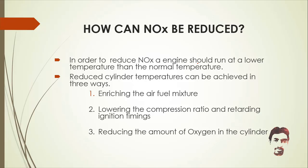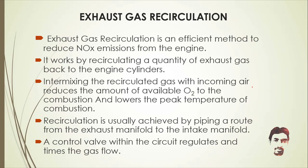Reducing cylinder temperature can be achieved in three ways: enriching the air-fuel mixture, lowering the compression ratio, and retarding ignition timing. Another approach is reducing the amount of oxygen in the cylinders — this is where exhaust gas recirculation comes in.